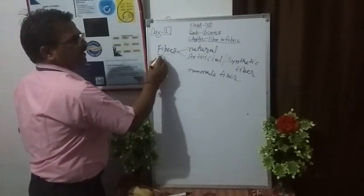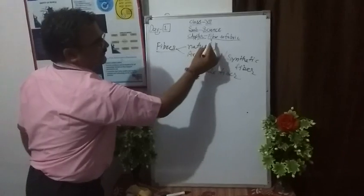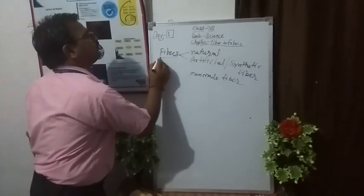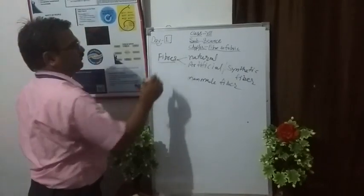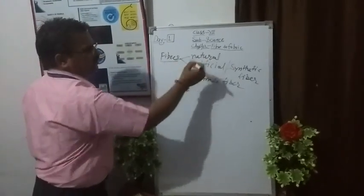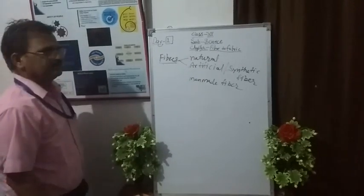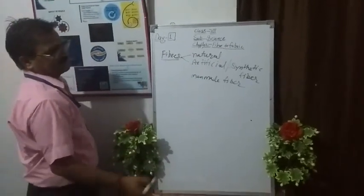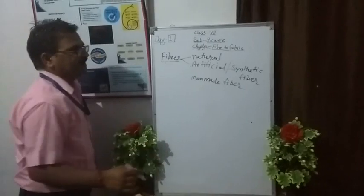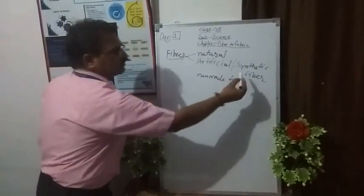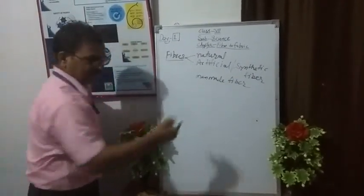Our topic name is Fiber to Fabric. Fiber do types hote hain: natural fiber or artificial fiber. Natural fiber aapko plants or animals se milte hain. Aur artificial fiber laboratories ke andar produce ki jaati hain, jinhe hum synthetic fiber aur man-made fiber kehte hain.